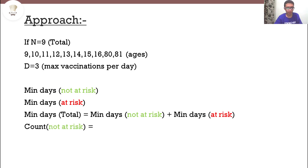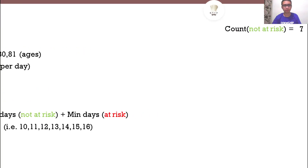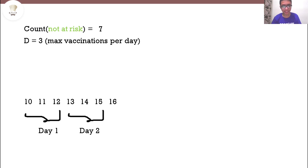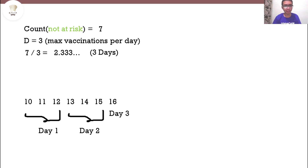Let's count the people who are not at risk — there are seven. With a maximum of 3 vaccinations per day, on day 1 we vaccinate the first three, day 2 the next three, and day 3 the remaining one. Dividing 7 by 3 gives 2.33, meaning two complete days and one partial day. Since there is no such thing as a partial day, it takes three complete days.